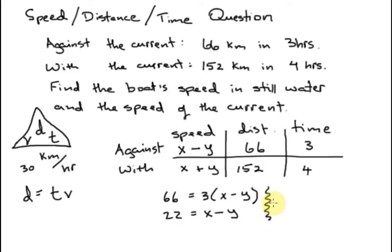Now my other equation here is going to be distance equals time times speed. So that's four times x plus y. And the same thing, the four divides perfectly into the 152. So I'm going to go ahead and do that. I think it goes in there 38 times. And there's the rest of it, the x plus y.